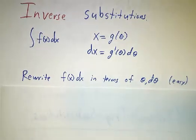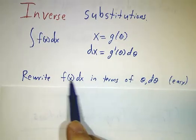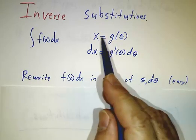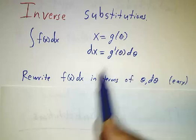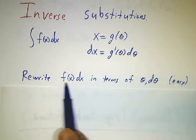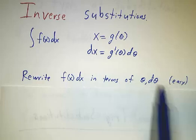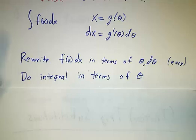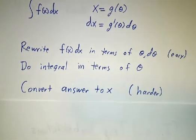So once again, we rewrite the integrand f(x) dx in terms of θ and dθ. Only now it's easy. f is just f(g(θ)), and dx is just g'(θ) dθ. So you can always rewrite the integrand in terms of θ pretty easily. Then you have to do the integral. And then you have to convert the answer back to x. And this is where the hard work comes in.